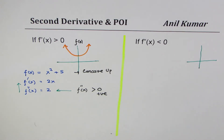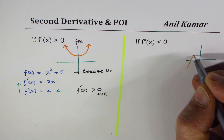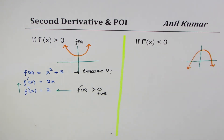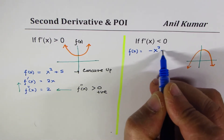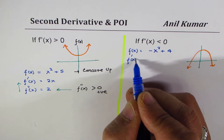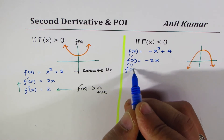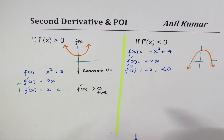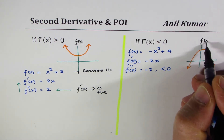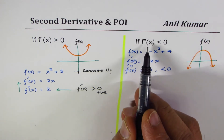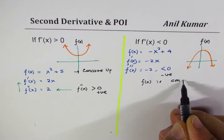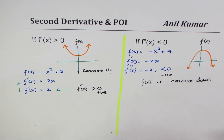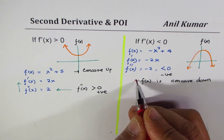Let's take another example — similar, but this time we flip it. If we take a parabola which is concave down and write f(x) = -x² + 4, then the derivative will be -2x and the second derivative will be -2, which is less than 0. So if the second derivative is less than 0 — meaning negative — then f(x) is concave down. This is a general result.